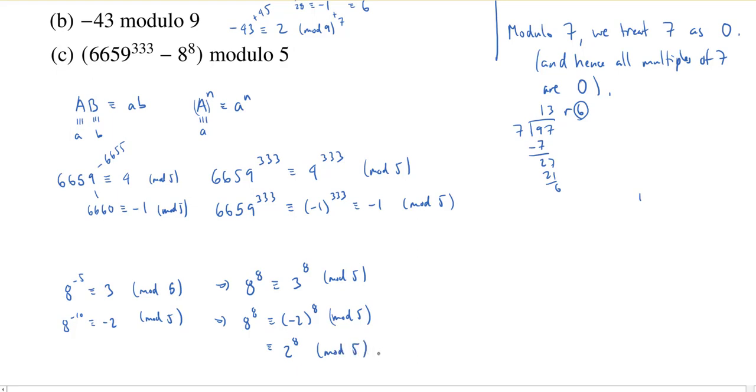Now, 2 to the 8th, we actually could just work it out directly. I mean, we could sit there and go, okay, let's see. 1, 2, 3, 4, 5, 6, 7, 8: 2, 4, 8, 16, 32, 64, 128, 256. And modulo 5, 256, well, this is one more than 255. So this is actually going to be congruent to 1 modulo 5.